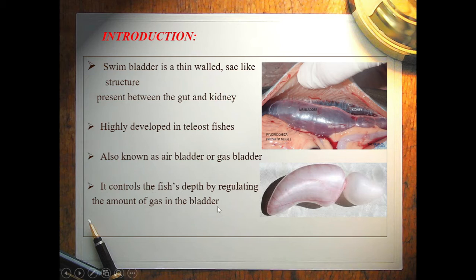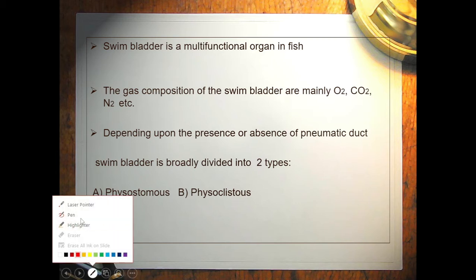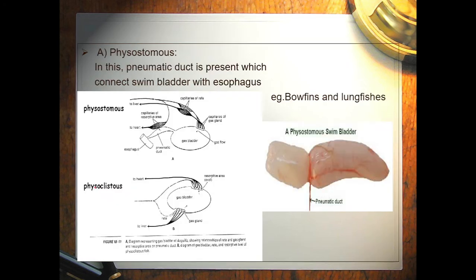The swim bladder controls the fish's depth by regulating the amount of gas in the gas bladder. It is a multifunctional organ in fish. The gas composition of the swim bladder mainly includes oxygen, carbon dioxide, nitrogen, etc. Depending upon the presence or absence of the pneumatic duct, the swim bladder is broadly divided into two types: physostomes and physoclistous.